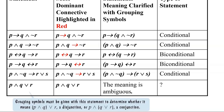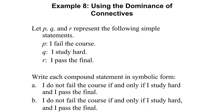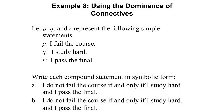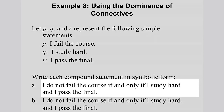Let P, Q, and R represent the following simple statements: P is 'I failed the course,' Q is 'I study hard,' and R is 'I passed the final.' Write each compound statement in symbolic form. For letter A: 'I do not fail the course if and only if I studied hard and I passed.'